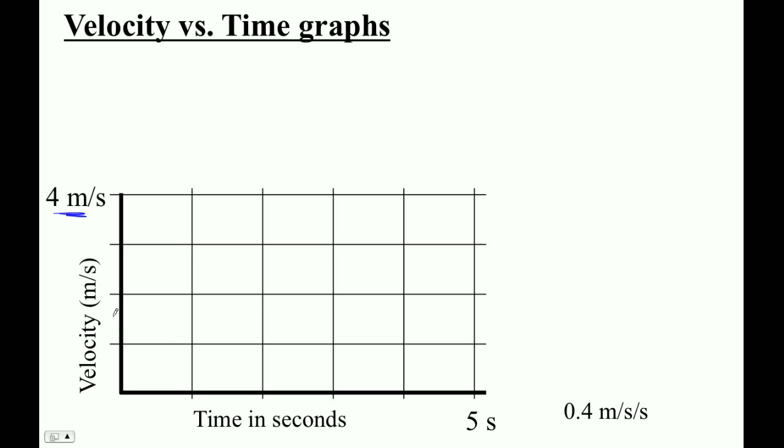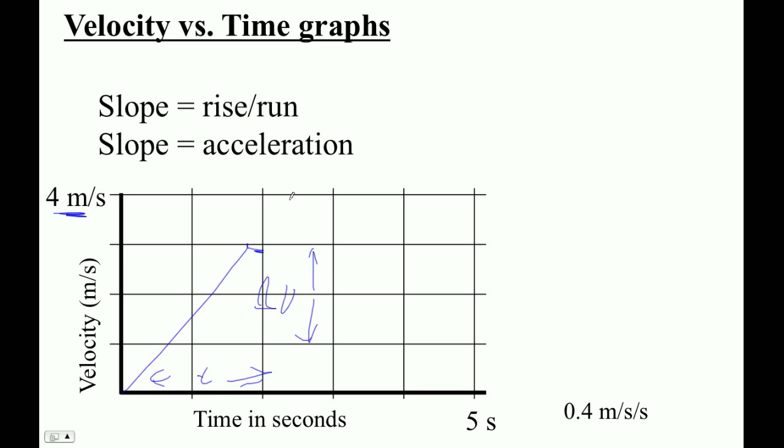But if you think about it, the slope on this graph, the rise over run, the rise would be a change in velocity because this axis is velocity, and the run would be time. And change in velocity over time is definitely acceleration. So the slope on these graphs is acceleration.